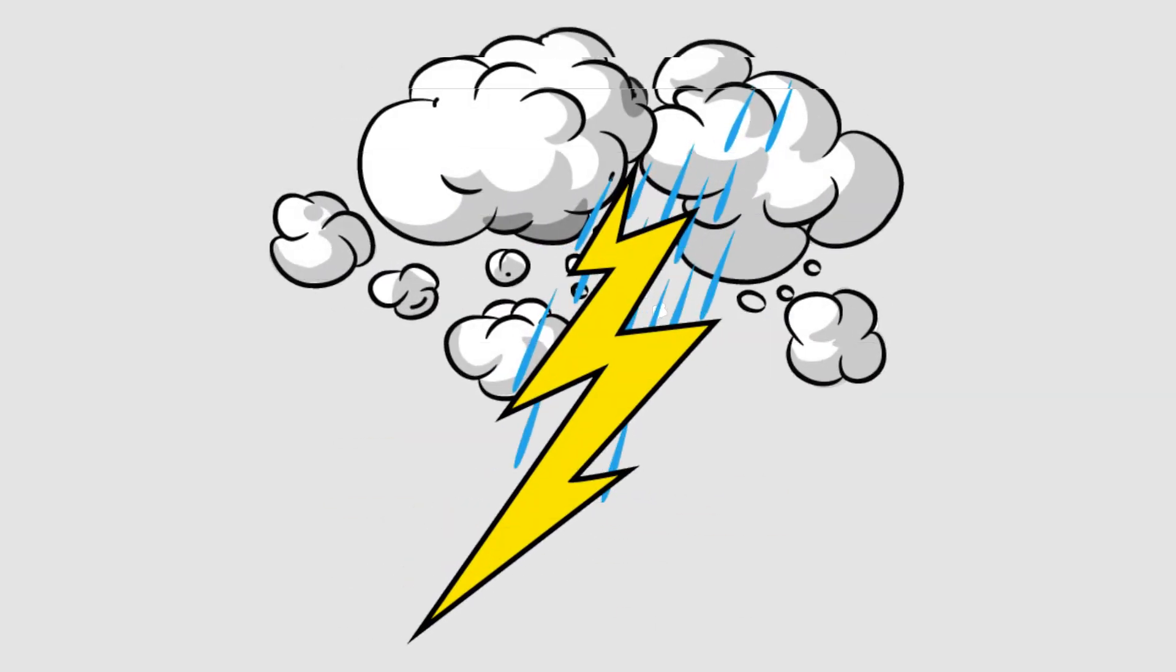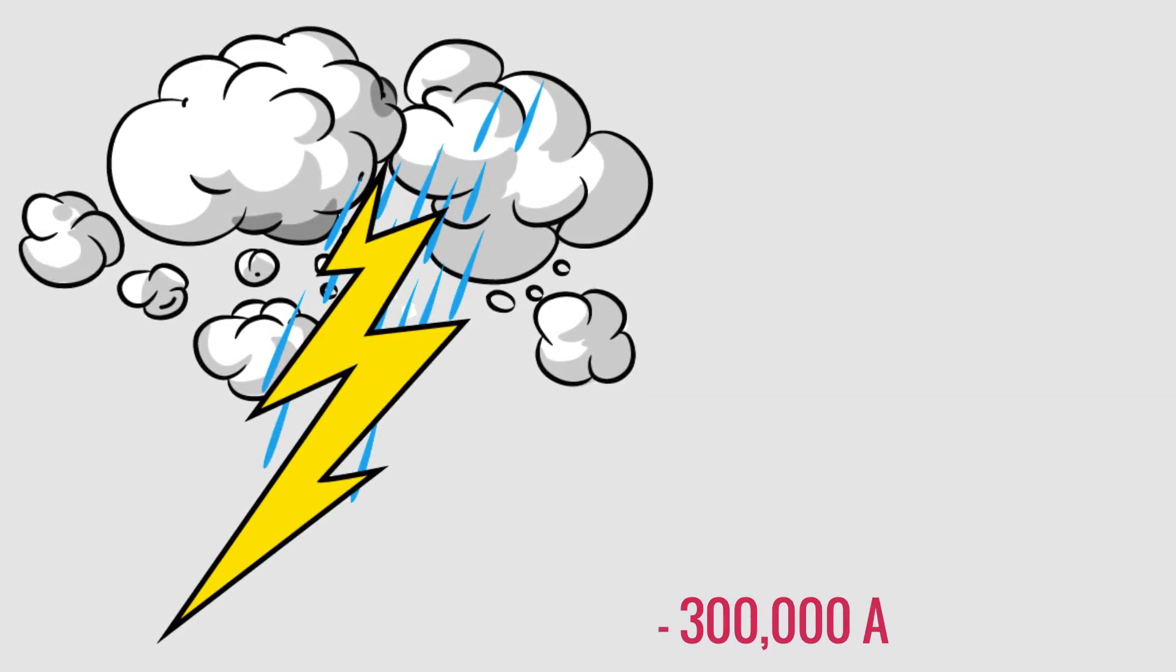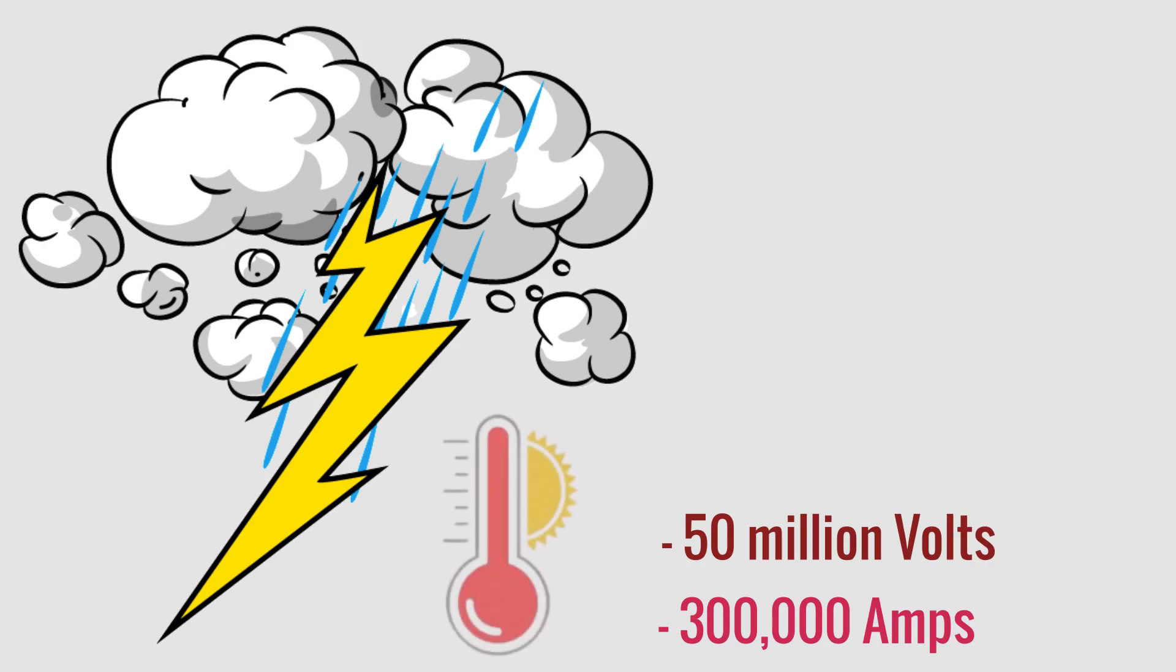Hello, lightning with extremely large currents can reach 300,000 amps, 50 million volts and generate a temperature of 27,000 degrees Celsius, five times hotter than the surface of the sun.